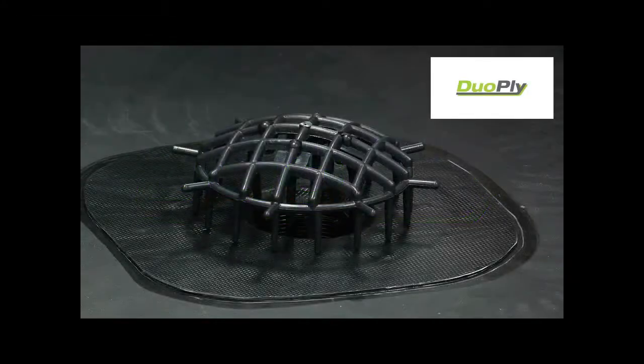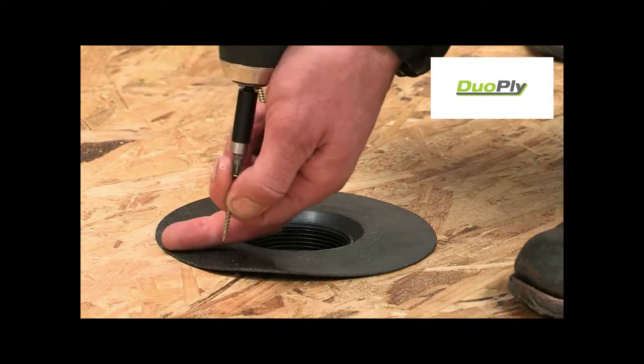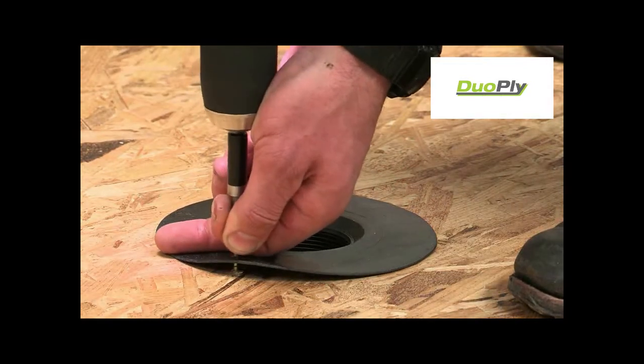The anti-backup drain can be installed full size, or trimmed down to a circle measuring 50mm wider than the outlet diameter. This method shows the drain trimmed down.